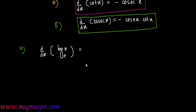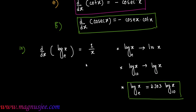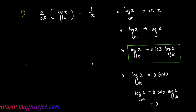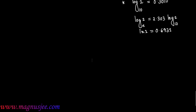Formula number 9: d/dx of log x base e equals 1/x. log x base e is actually ln x. Note that log x base 10 is denoted by log x only, and the relation between them is: log x base e = 2.303 × log x base 10. For example, log 2 base e = 2.303 × log 2 base 10 = 0.6931.